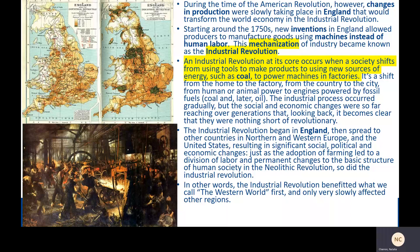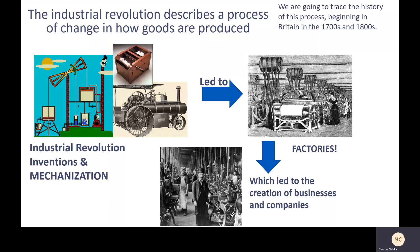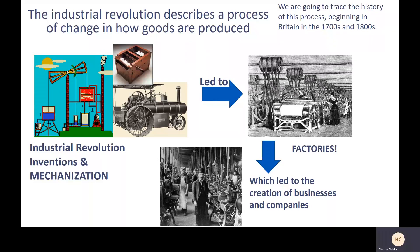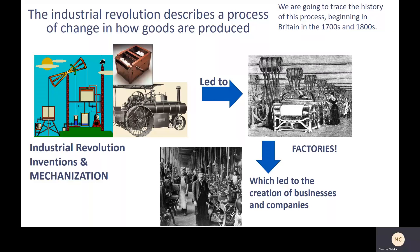The industrial revolution benefited what we call the western world first, and only very slowly affected other regions — it's a process that played out in different places at different times. Fundamentally, it describes a process in which machines replace muscle power. This relied on inventions such as the steam engine and the cotton gin, which led to the rise of factories, the factory system, and assembly line production, and then to the creation of businesses and companies in the form we're familiar with today.